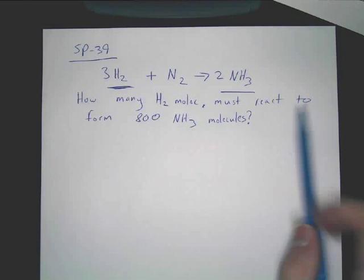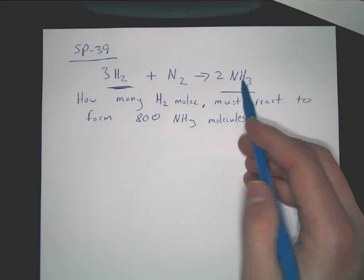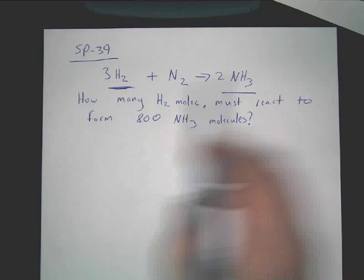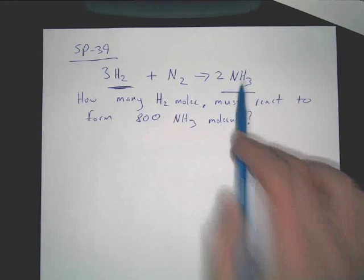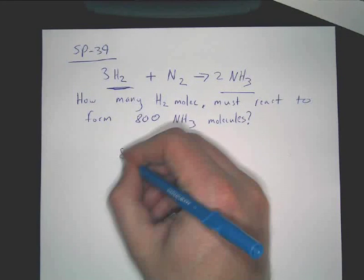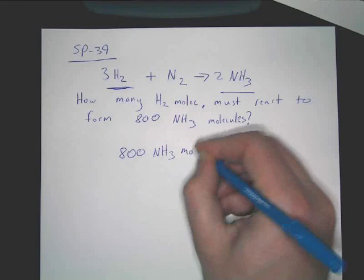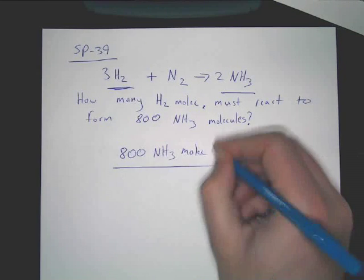For right now, all you care about is what you're starting with, what you're ending with. So it's basically saying you have 800 molecules of NH3 produced. We want to go back in time and figure out how many H2 molecules were needed to make that. So all you're going to do, you start out, you write 800 NH3 molecules.